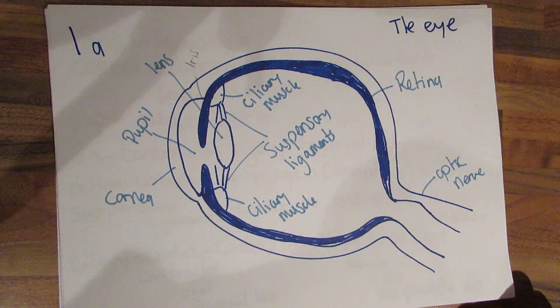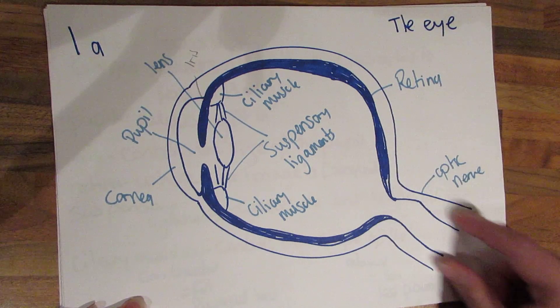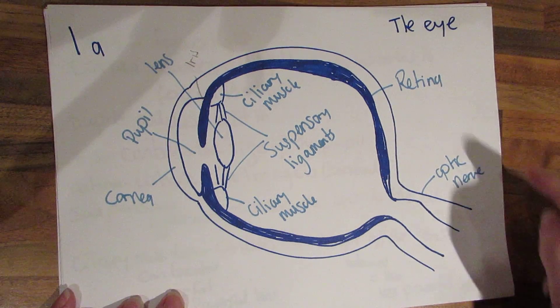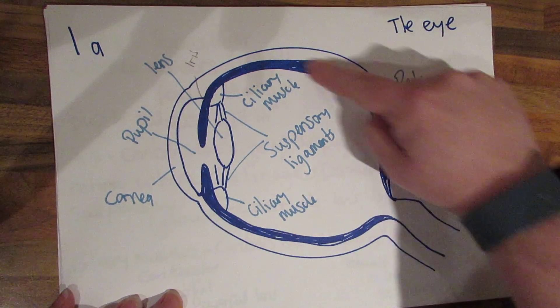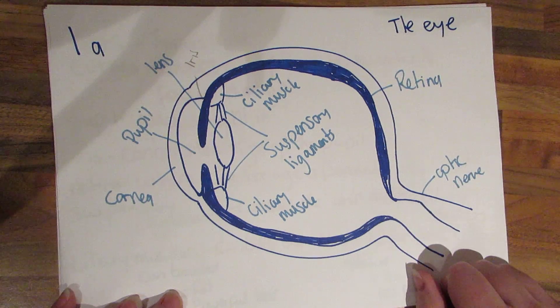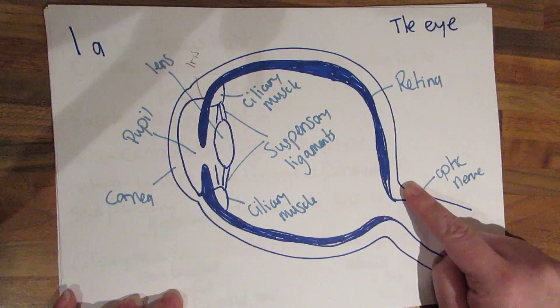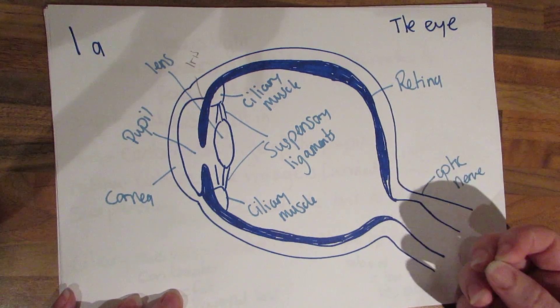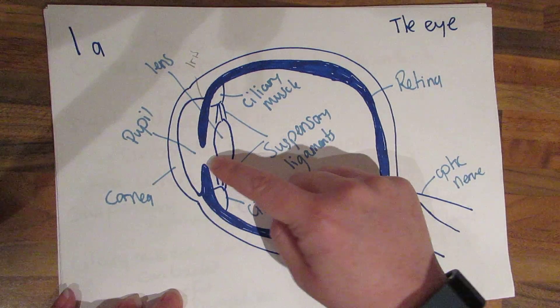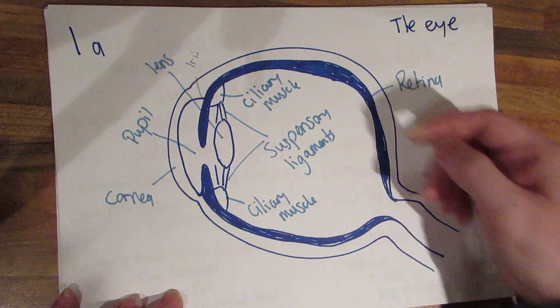So first thing you need to know for this is the structure of the eye. We have the optic nerve which goes to the brain here. The retina, that's the black bit that covers the whole of the inside of the eye. The cornea, this is the clear bit that's all around the outside. This is quite hard and tough, really tough to get anything through. The pupil, this is the black bit you can see in the eye.